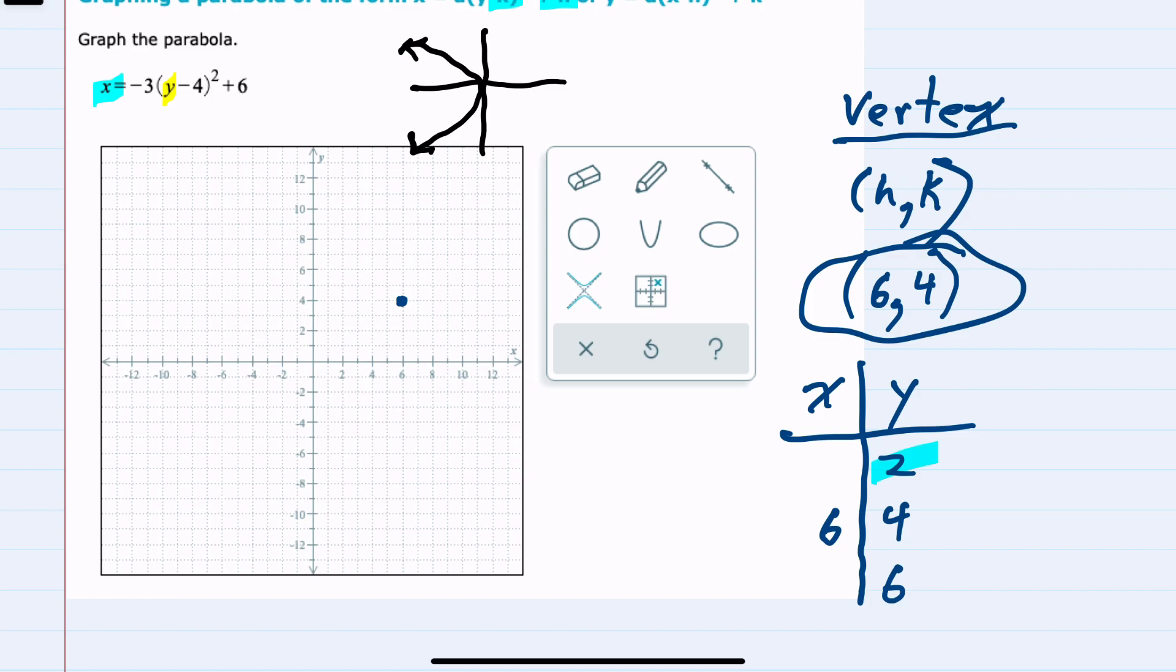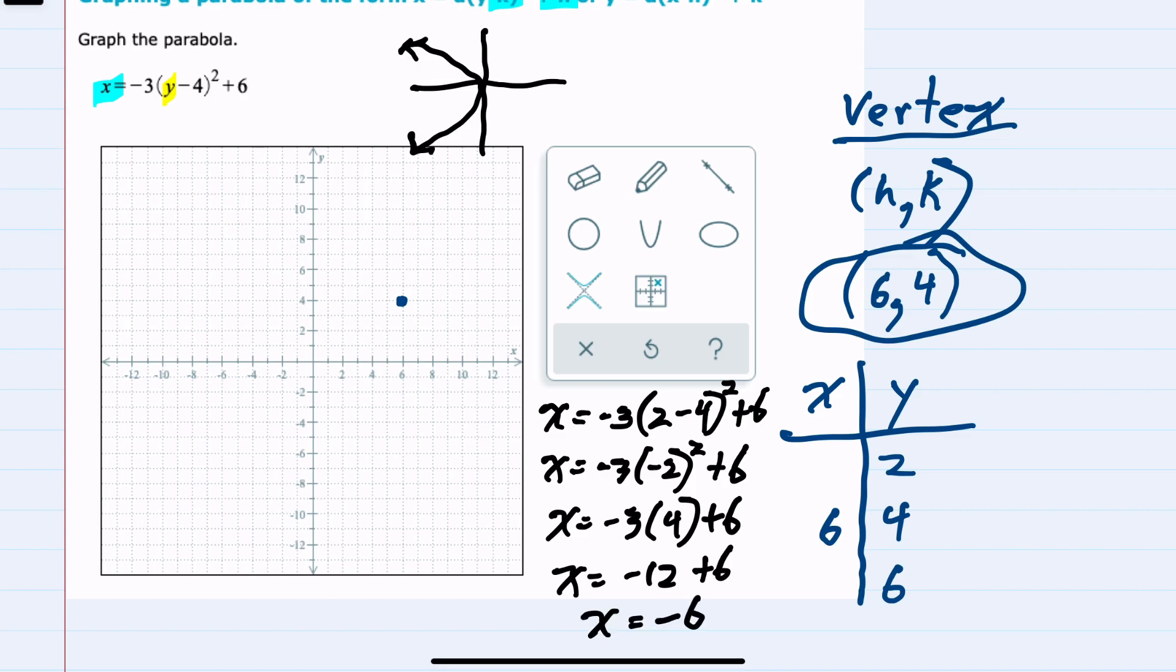Starting with y equals 2, our equation is x equals negative 3 times y, which we're saying is 2, minus 4 squared plus 6. Simplifying x equals negative 3 times negative 2 squared plus 6. Order of operations, negative 2 squared is 4. Then doing the multiplication, negative 12 plus 6. x is negative 6. So x is negative 6 when y is 2. So we have this point.